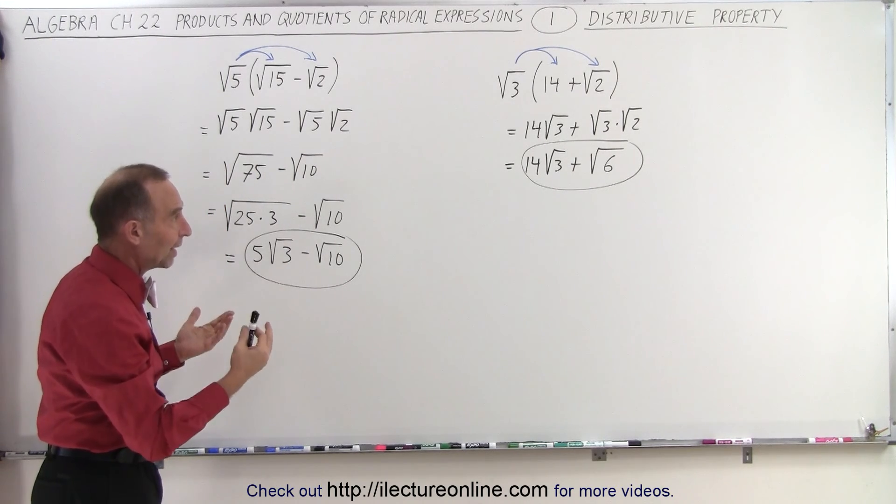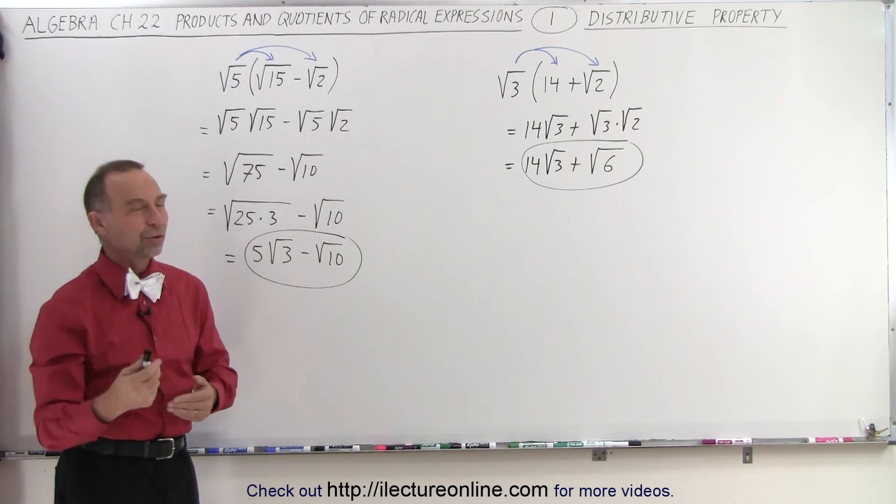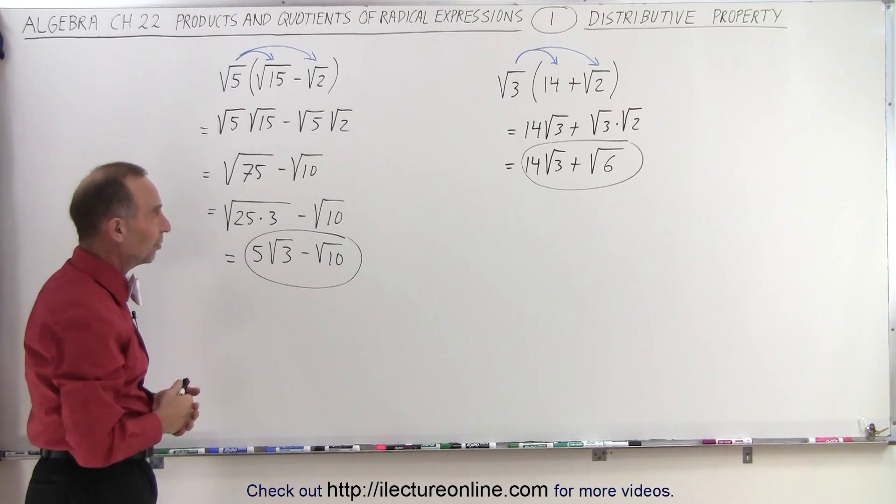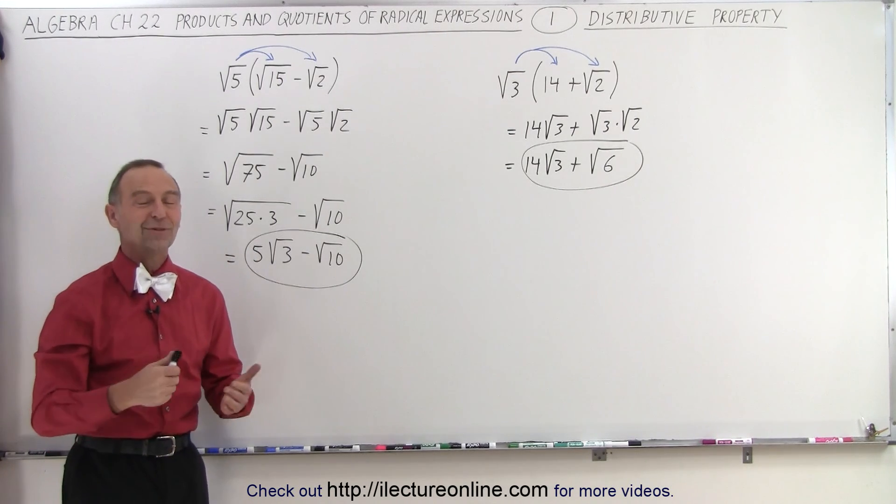So you can see that when we multiply, even when we have radicals, we still use the old properties. In this case, the distributive property. And that is how it's done.